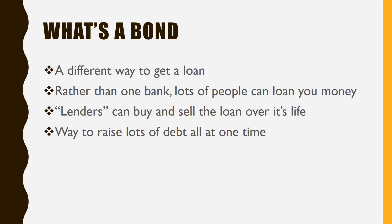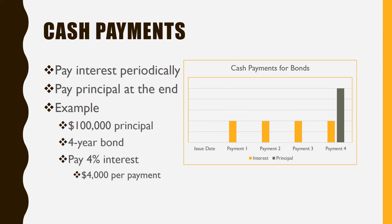Except now it's going to be debt rather than ownership. So rather than getting a loan from one bank, we're going to split our debt up into thousand-dollar increments and let different people buy and sell these bonds — these little pieces of debt — over the life of the loan. We can issue 20-year loans, and bondholders can buy and sell between themselves without even notifying us. It's a nice way to raise lots of debt at one time at a cheaper rate.